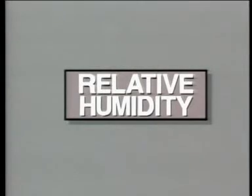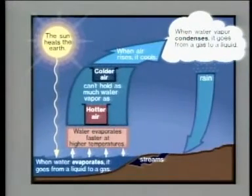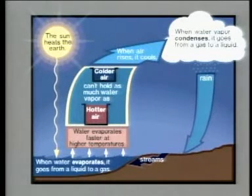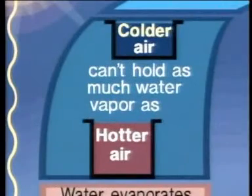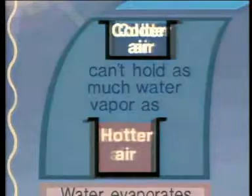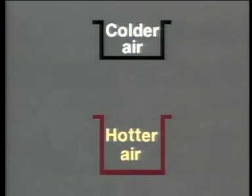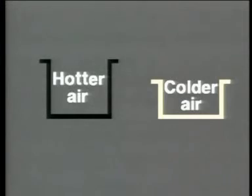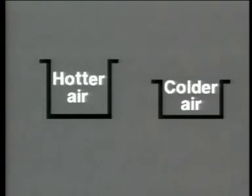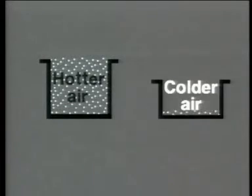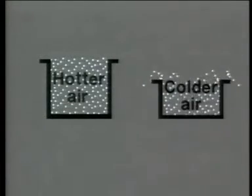Here's how relative humidity works. We start with the rule: hotter air can hold more water vapor; colder air can't hold as much. We can show the water a hotter air mass can hold with a large container, and the amount a colder air mass of the same size can hold with a smaller container. The hotter air mass can hold this much water and no more; the colder air mass can hold only this much water and no more.